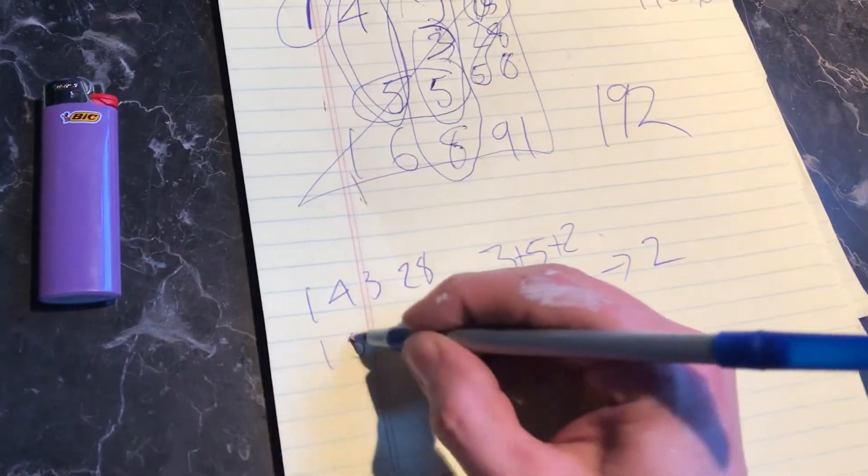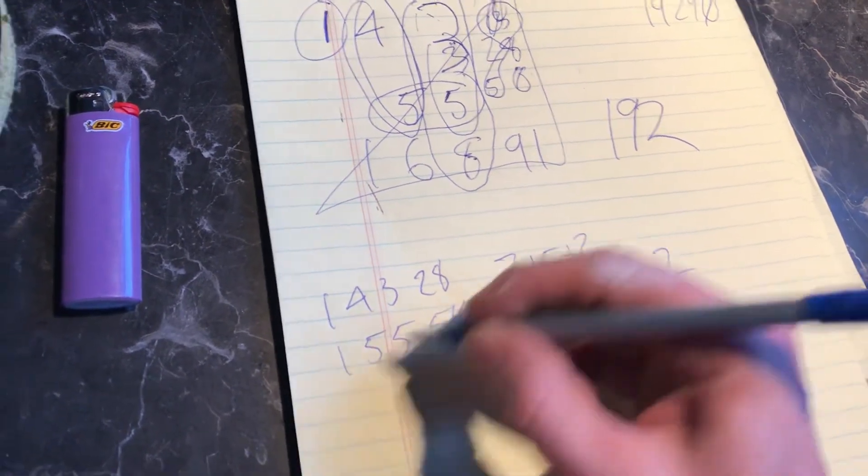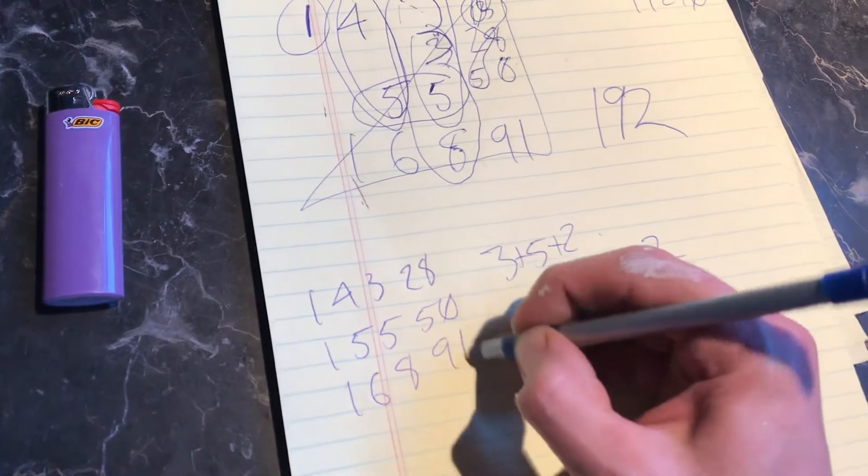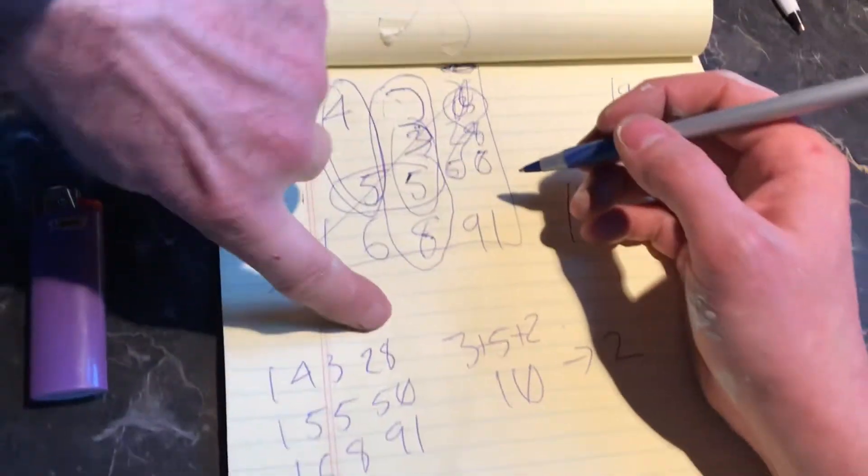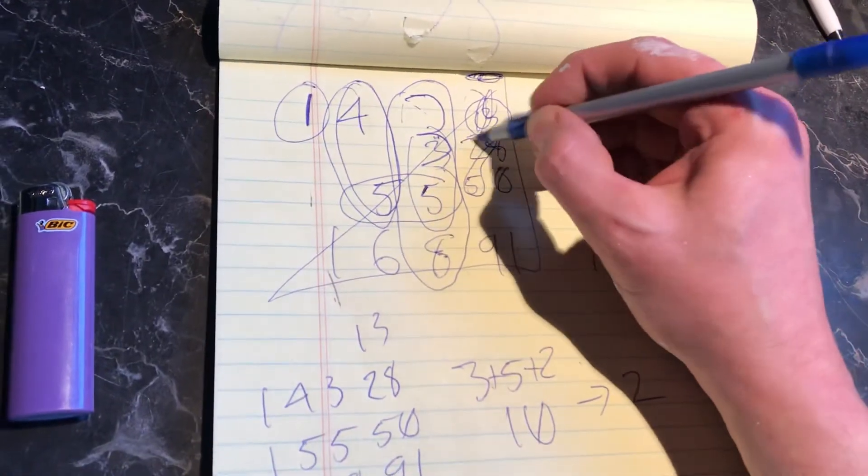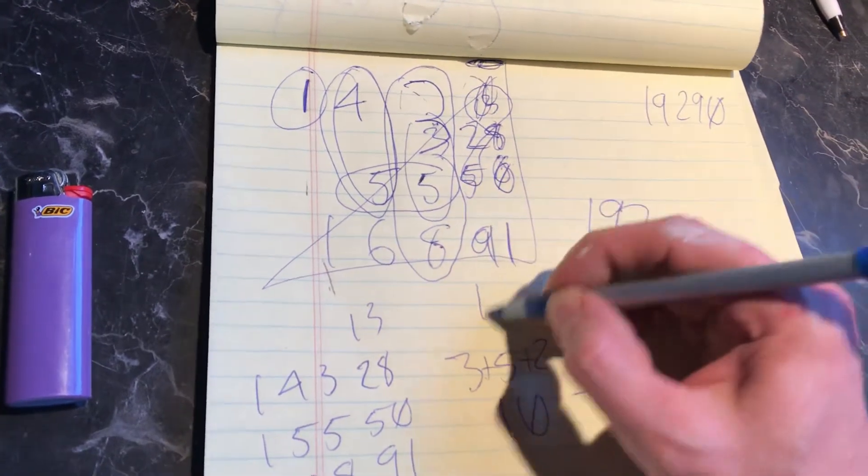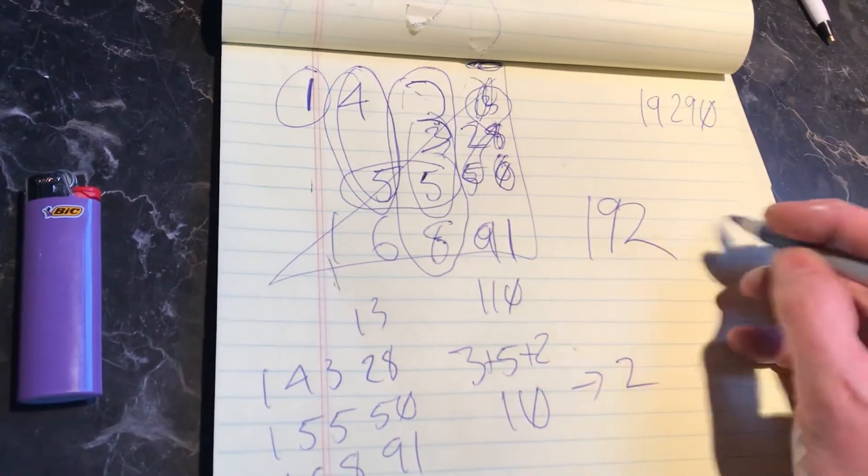It goes one, five, five, 50. It goes one, six, eight, 91. Up here would be a 13. Up here would be the 13. So I just drew it wrong here. So if you go 28, 50, 91, and 110, we got to find the 90.